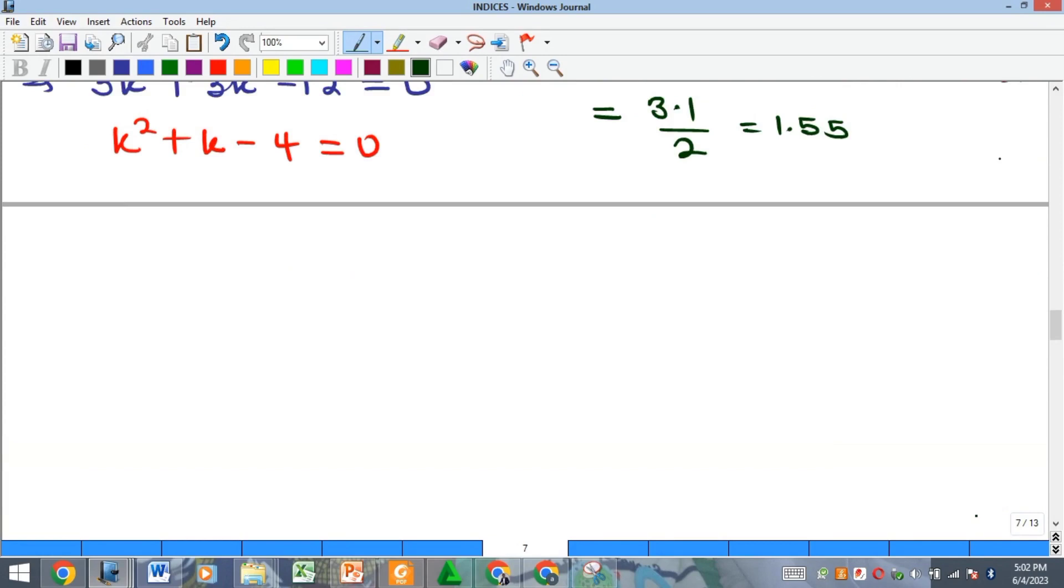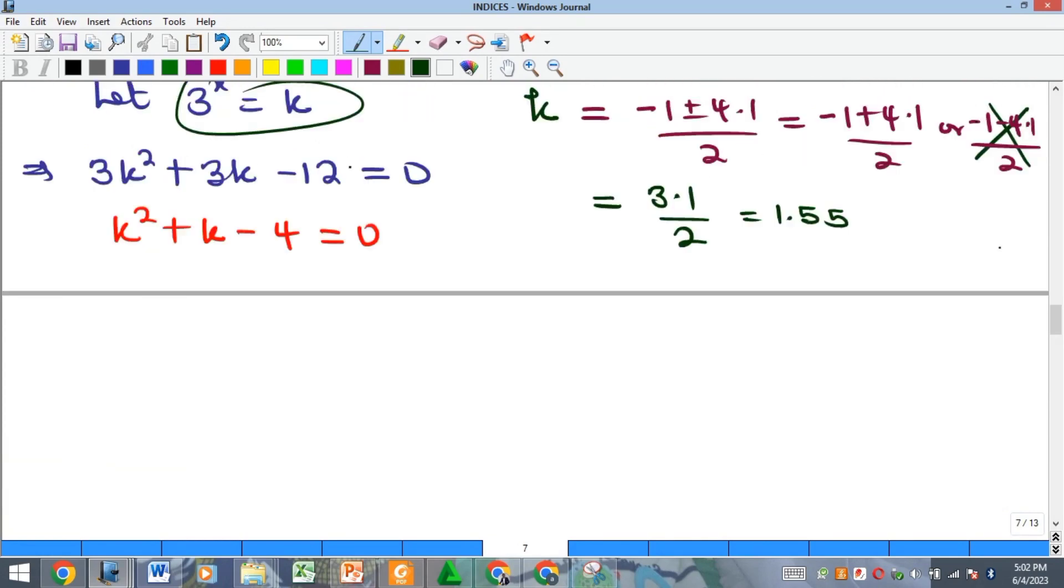Okay, so the next is we now try to substitute into this formula, and if we do that, our 3 raised to the power of x is equal to k, where our k is now 1.55. So what do we do? We take the log of both sides, so we'll have the log of 3 raised to the power of x, and so this x will come down by the rule of log, so we'll have x log 3 equal to the log of 1.55.